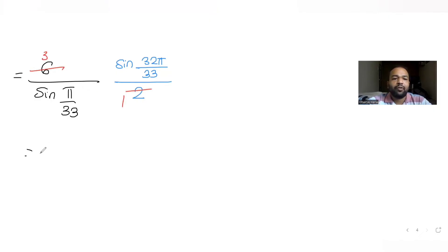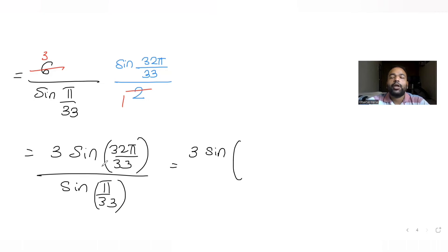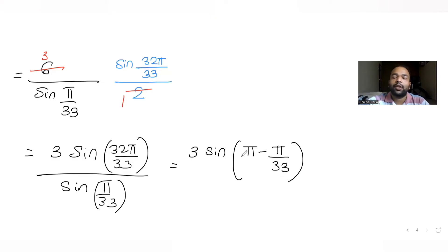After cancelling, we are left with 3·sin(32π/33)/sin(π/33). So the entire expression becomes 3·sin(32π/33)/sin(π/33). Now I note that 32π/33 = π − π/33.